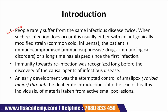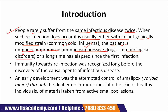Introduction: People rarely suffer from the same infectious disease twice. When such reinfection does occur, it is usually either with an antigenically modified strain — such as the common cold or influenza — or the patient is immunocompromised, meaning they are on immunosuppressive drugs or have immunological disorders, or a long time has elapsed since the first infection.